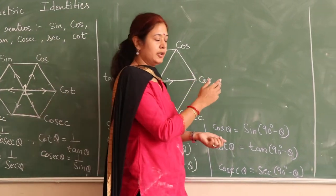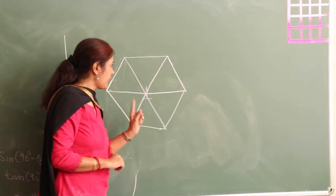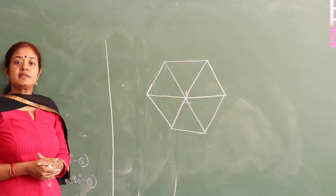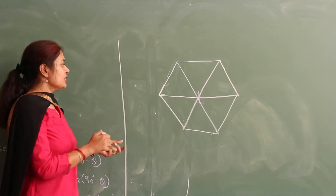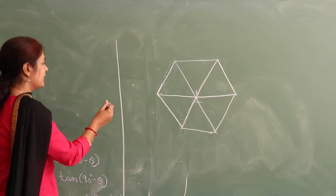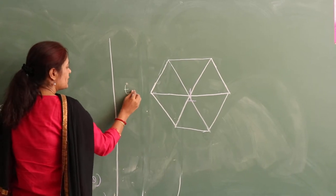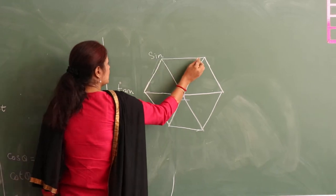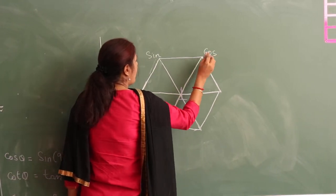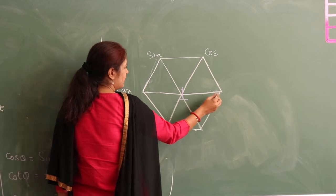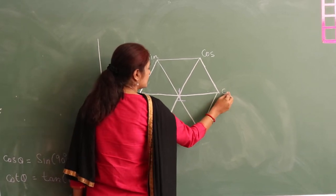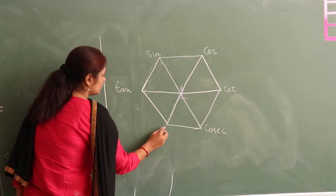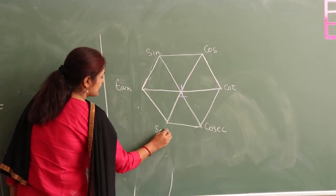Now the last one. Again with the help of regular hexagon we learn the third set of trigonometric identities. Here also first we will write the trigonometric ratios: tan here, then sin, cos, all the cosecs will be on the right-hand side, so next will be cot, then cosec, and last one is sec.